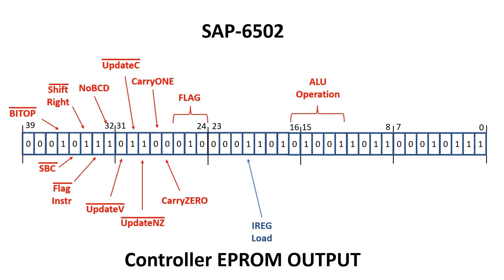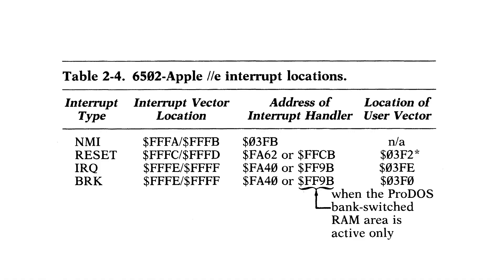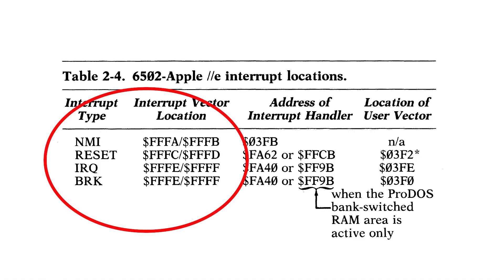We need some control signals for access to main memory. We need to clock the program counter — another two signals, one for the higher byte and one for the lower byte. We need some other ancillary signals: one for resetting the sequence counter and one for outputting a constant to the W bus. This is a four-bit value which is sign-extended to eight bits. Using this we can set all the values we need for the interrupt and reset vectors.